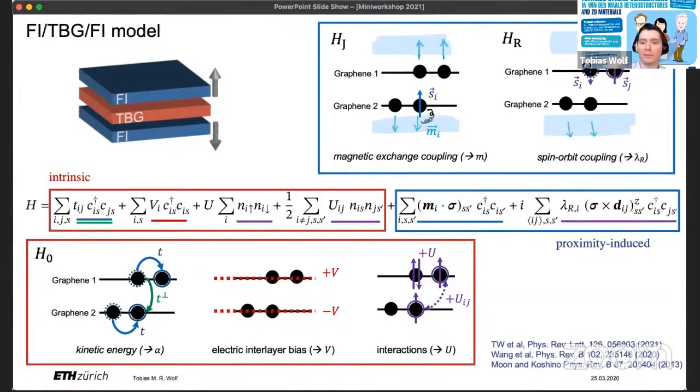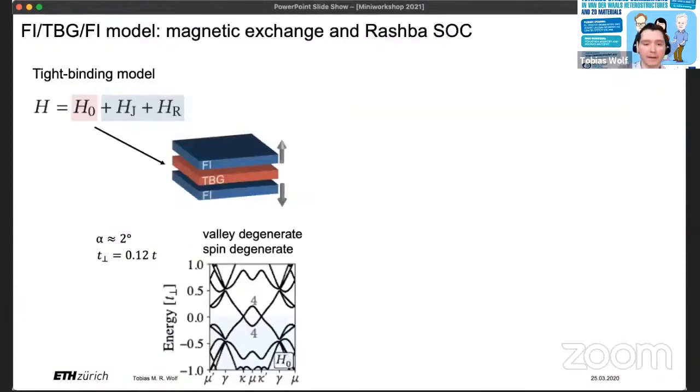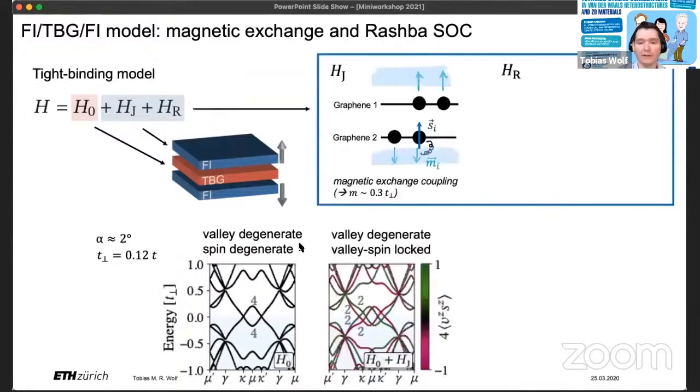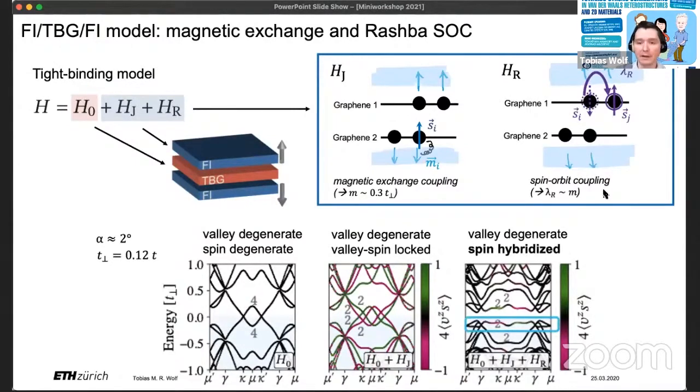You probably don't care as much about the model as you will care about what this will do to our electronic bands. So here I start from the band structure of twisted bilayer graphene at, let's say, two degrees twist angle. So here we get fourfold degeneracies due to valley and spin. If we now include the effect of the magnetic exchange coupling, we see that we get a splitting. For example, here the green bands will be degenerate between states K spin up and K prime spin down. So we have valley degeneracy and valley spin locking. If we now include Rashba spin-orbit coupling, we see that the spin gets hybridized. And we also observed that we get flat bands around charge neutrality. And those flat bands are now still degenerate in valley, but essentially the spin is frozen out due to the proximity to the ferromagnetic insulators. And this is why we expect to get non-trivial valley correlations when we include interactions. This is what I want to show you.